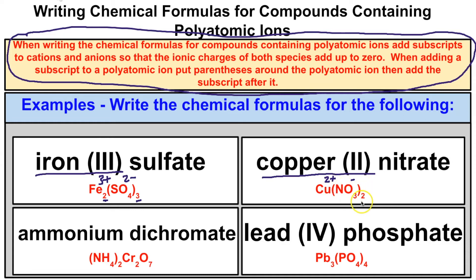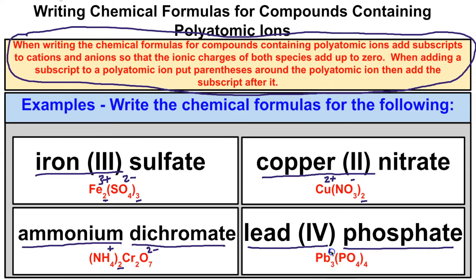For copper(II) nitrate: Cu has a 2+ charge and nitrate has a 1- charge, so we need two nitrate ions. We put parentheses around the nitrate and add a subscript of 2. For ammonium dichromate: NH4+ has a 1+ charge and dichromate has a 2- charge. We put parentheses around ammonium and add a subscript of 2; two times +1 is +2, which cancels the -2 of dichromate. For lead(IV) phosphate: Pb has a 4+ charge and PO4 has a 3- charge, so we add parentheses around PO4 with a subscript of 4, since 4×(-3)=-12 and 3×(+4)=+12.